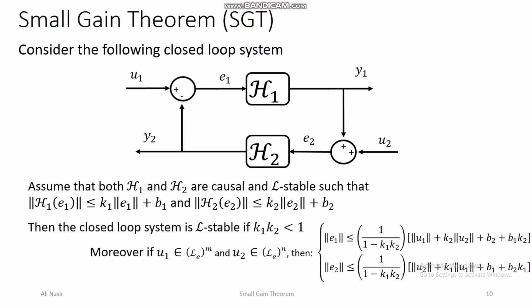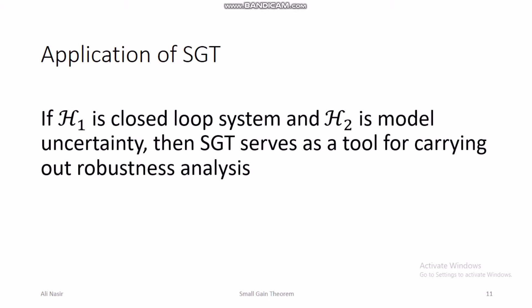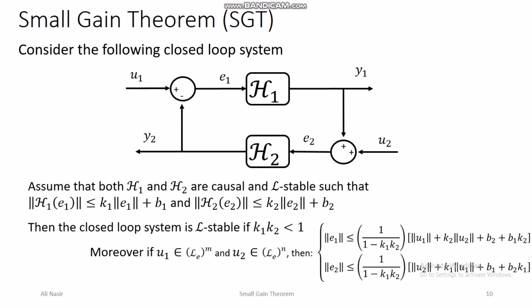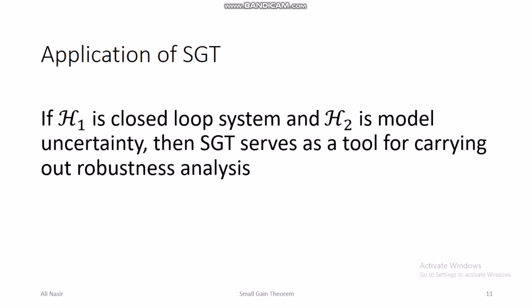Upper bounds on e1 and e2 are useful because, since ‖y1‖ ≤ k1‖e1‖ + b1, knowing k1, b1, and the bounds on e1 allows you to find bounds on y1 and y2. One major application of the small gain theorem is that when H1 is a closed-loop system and H2 represents modeling uncertainty, the small gain theorem serves as a tool for robustness analysis.